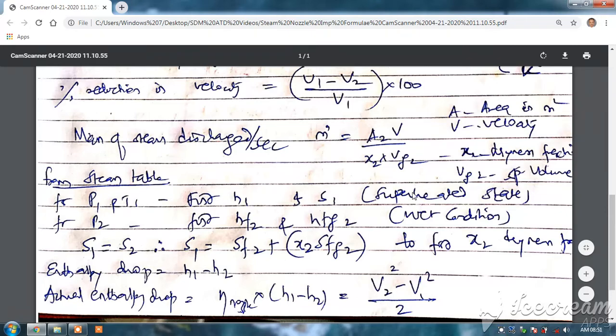If it is in superheated state, then you have to go for the superheated state table, not from the saturated one. Then P2 is given - find hf2 and hfg2 from wet condition from the saturated steam table.